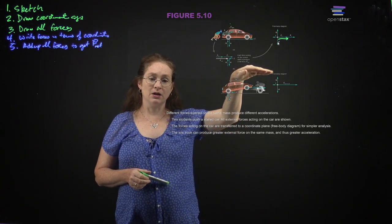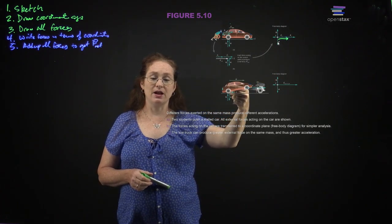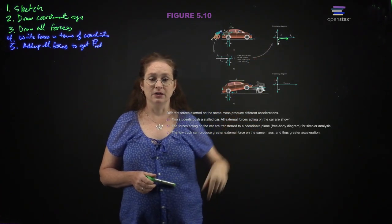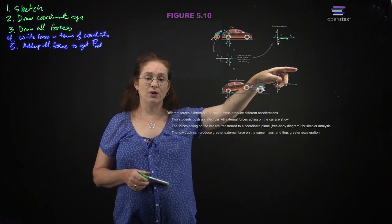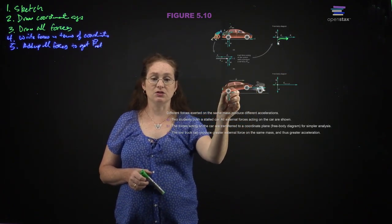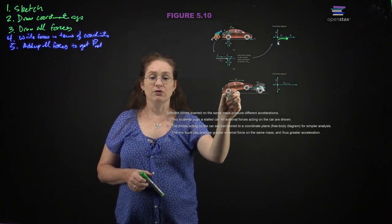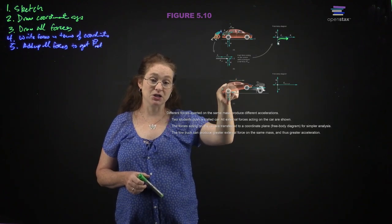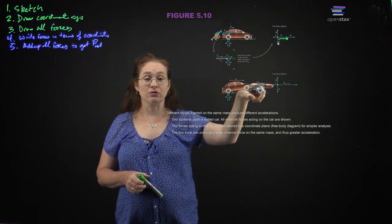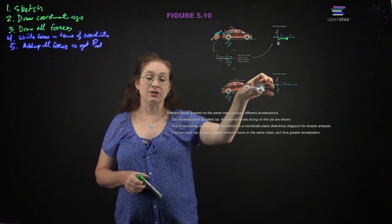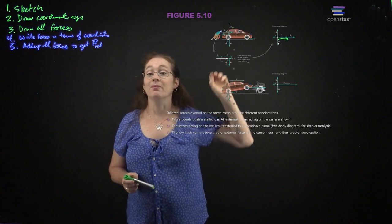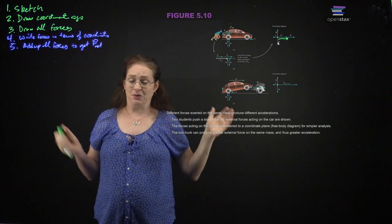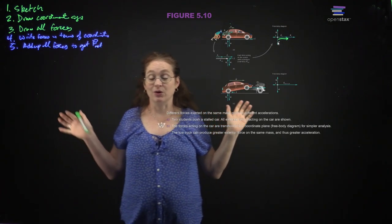For a car on a tow truck, you'd still have friction, the normal force, and gravity, plus the force from the tow truck. In practice, these don't all act on the same point — friction, normal force and gravity act where the tires hit the road, while the tow truck force is applied at the front. Nevertheless, we model the car as a point particle, and it turns out to be a really good approximation most of the time.